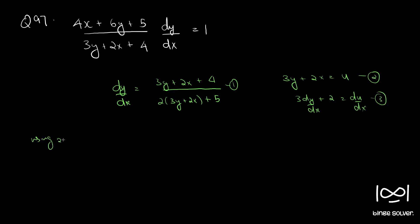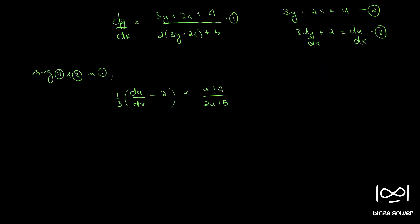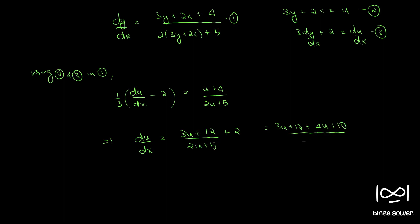Using equations 2 and 3 in equation 1, dy/dx equals (du/dx minus 2) divided by 3, and this equals (u plus 4) divided by (2u plus 5). So that gives du/dx equal to 3 times (u plus 4)/(2u plus 5) plus 2.